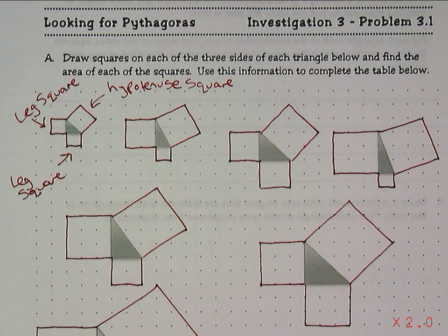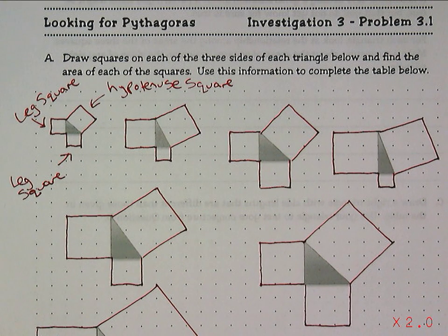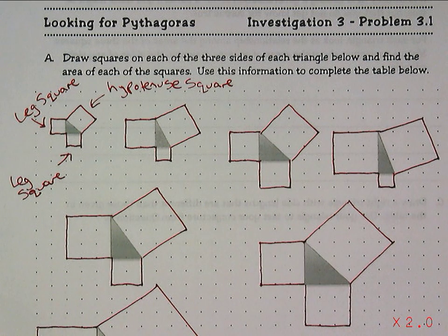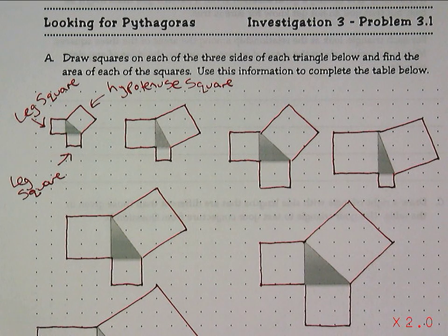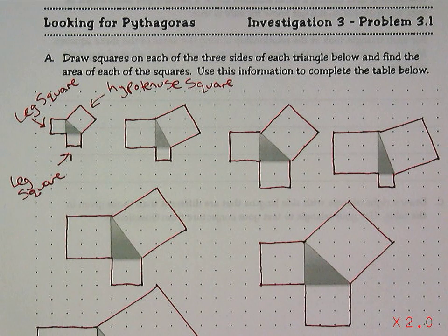Welcome to Looking for Pythagoras Investigation 3, problem 3.1. We're going to do a little introduction to this problem to help you get started on this particular lesson. The idea here is to draw squares off of each of the three sides of the triangles below, find the area of each of these squares, and then complete a table at the bottom as we do that.